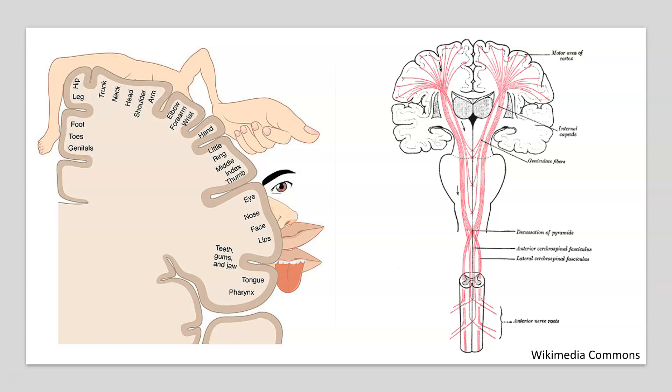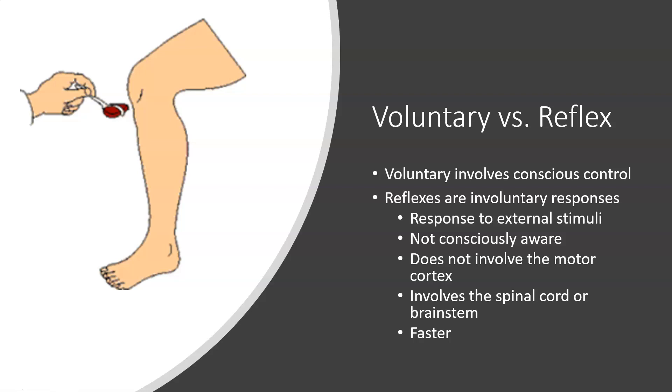And so this pathway that we see here is dedicated to producing voluntary movements, right? We initiate a response from the primary motor cortex, and it transmits the information down the spinal cord and eventually reaches our skeletal muscles. And so like I said, the voluntary muscles involve conscious control. In contrast, we have reflexes, which are involuntary responses. And so these involuntary responses are due to some external stimuli causing our body to react. This doesn't involve any conscious awareness, and it does not involve the motor cortex.